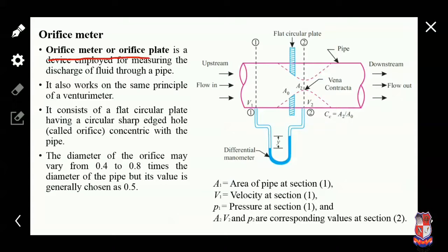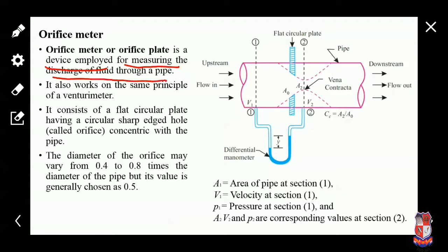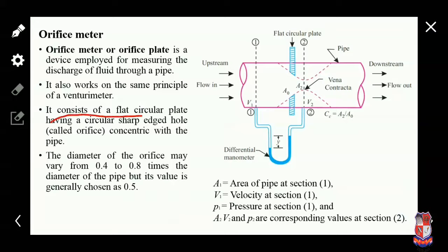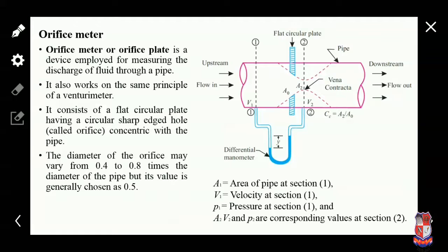First of all, an orifice meter or orifice plate is a device which can measure the discharge of fluid through a pipe. It works on the same principle as the venturimeter. It consists of a flat circular plate having a circular sharp-edged hole concentric with the pipe — this is the orifice meter.